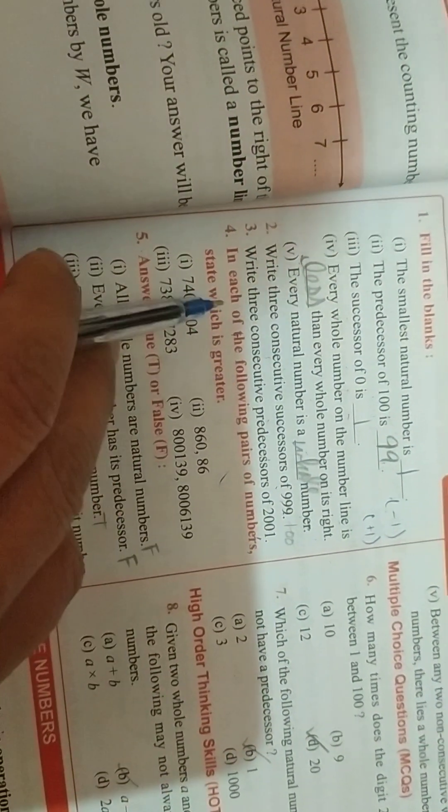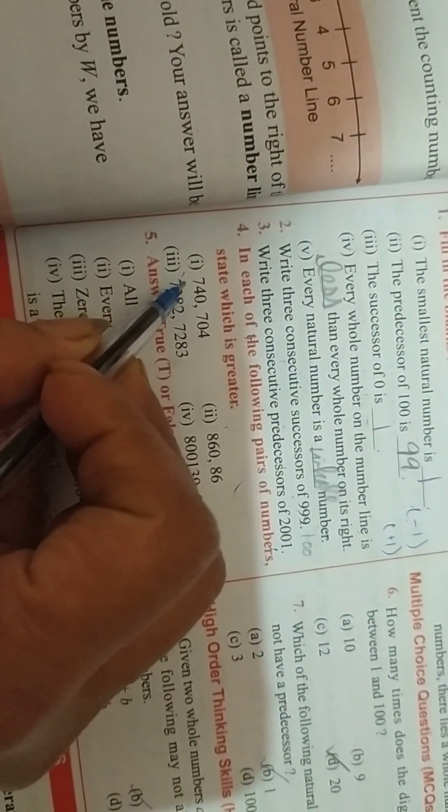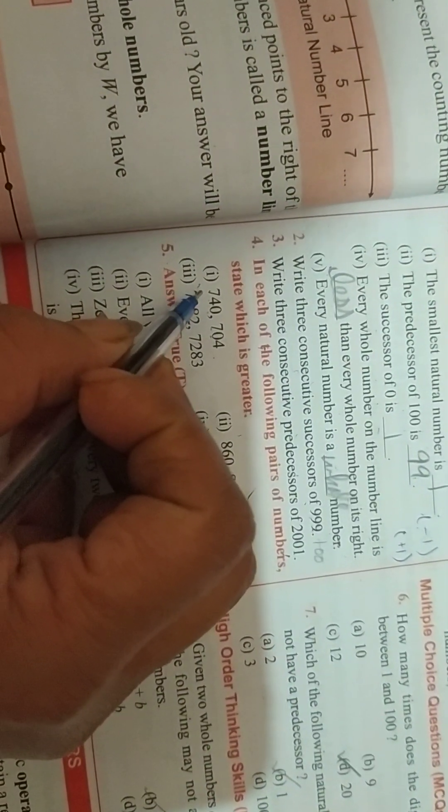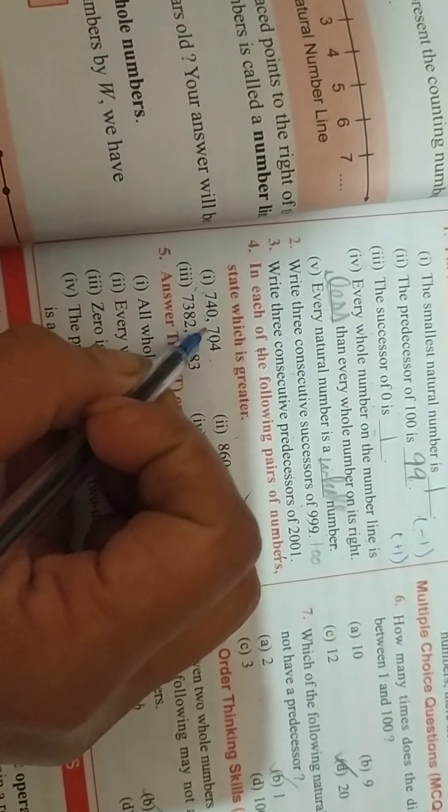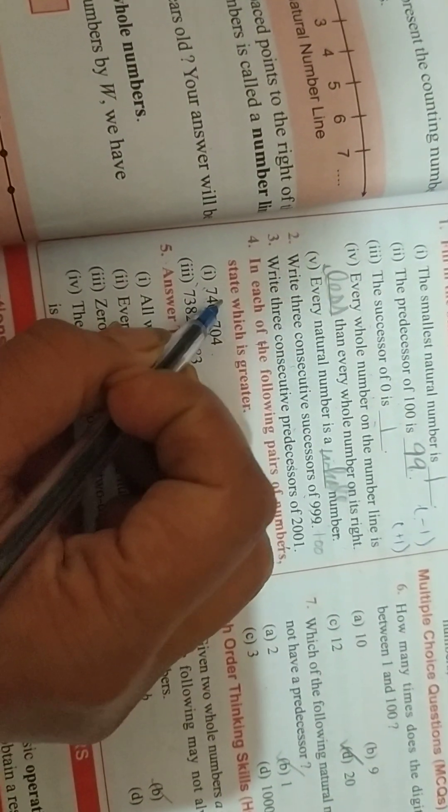In each of the following pair of numbers, state which is greater. See, first of all, we will check the number of digits. 1, 2, 3. 1, 2, 3. Same. Now, check the first digit individually. 7, 7. Same. It is 4 and a 0. 4 is greater. That's why this is greater.